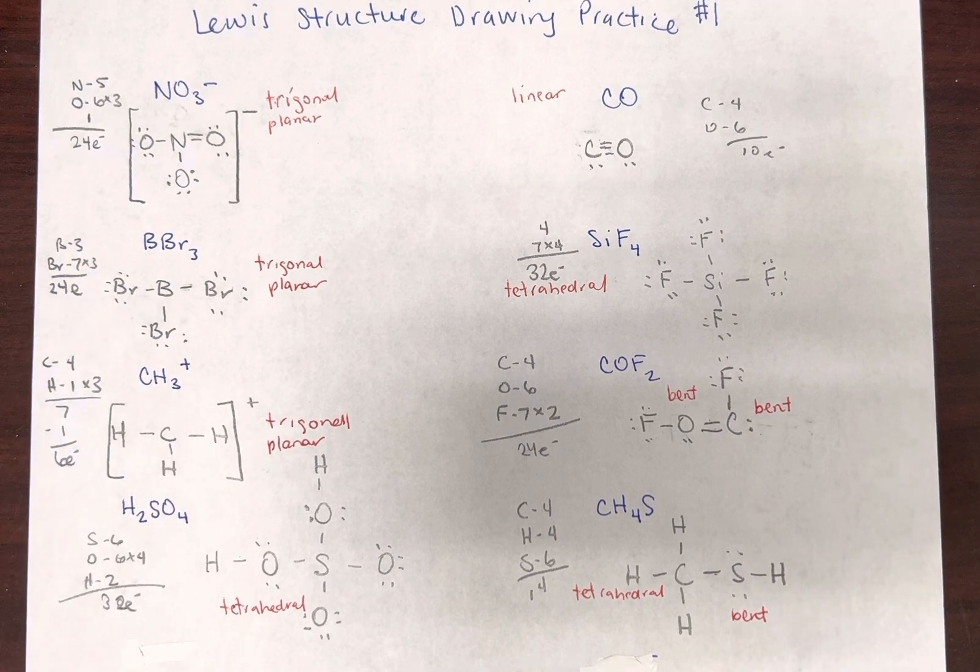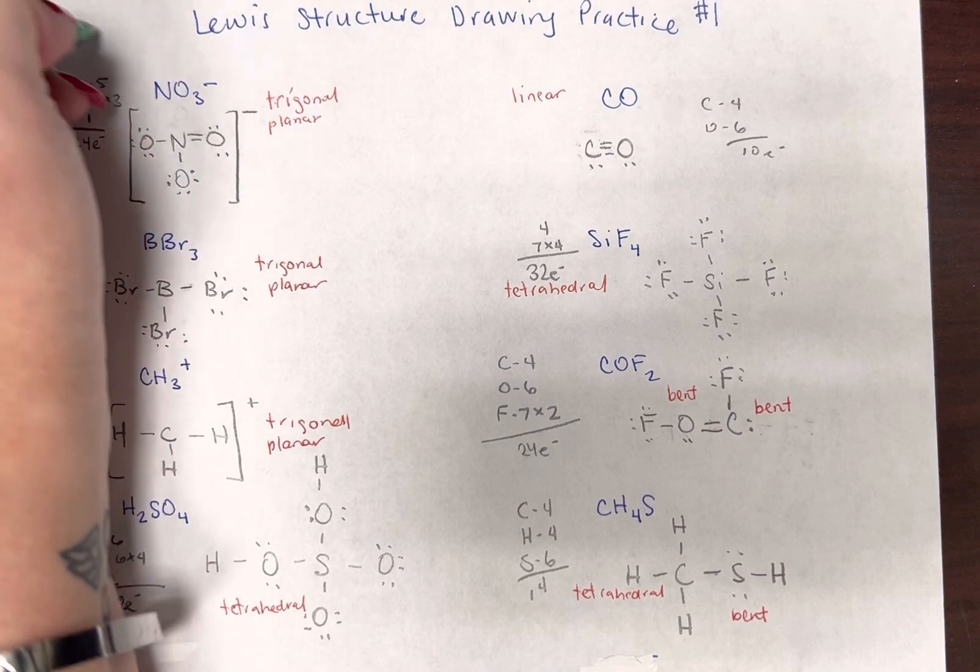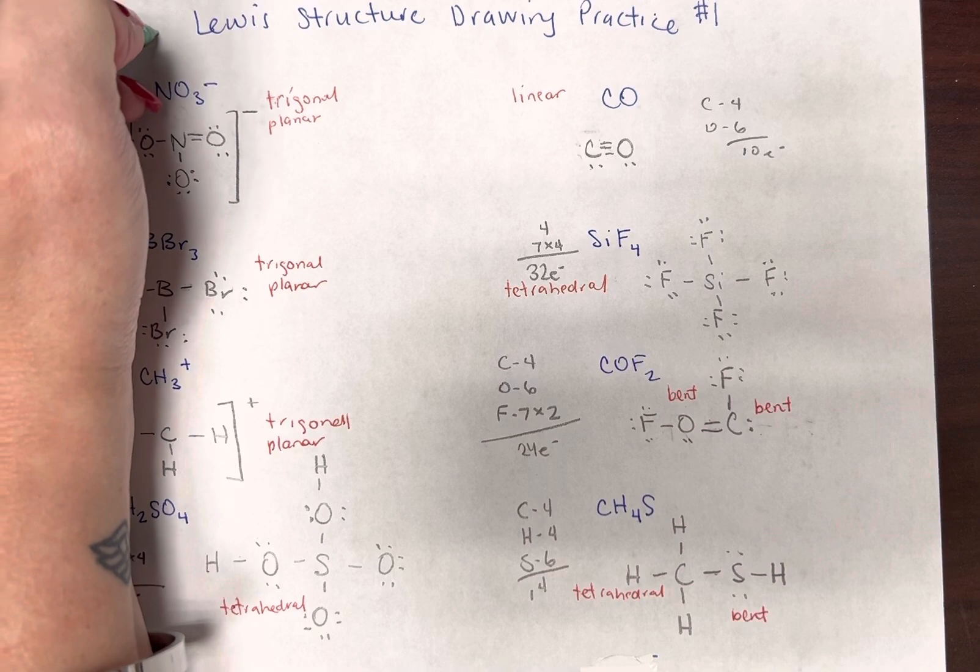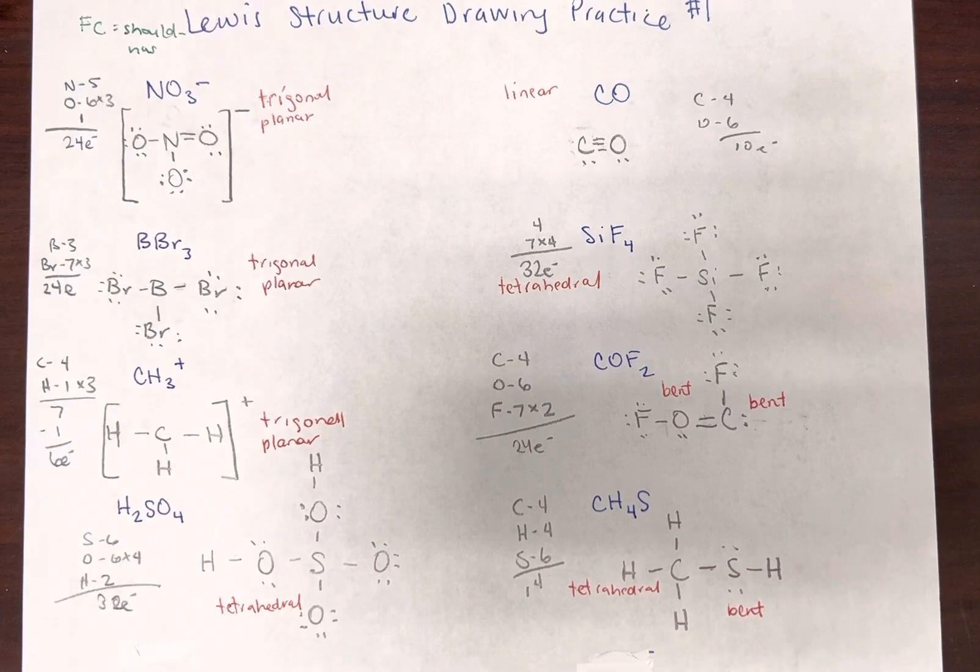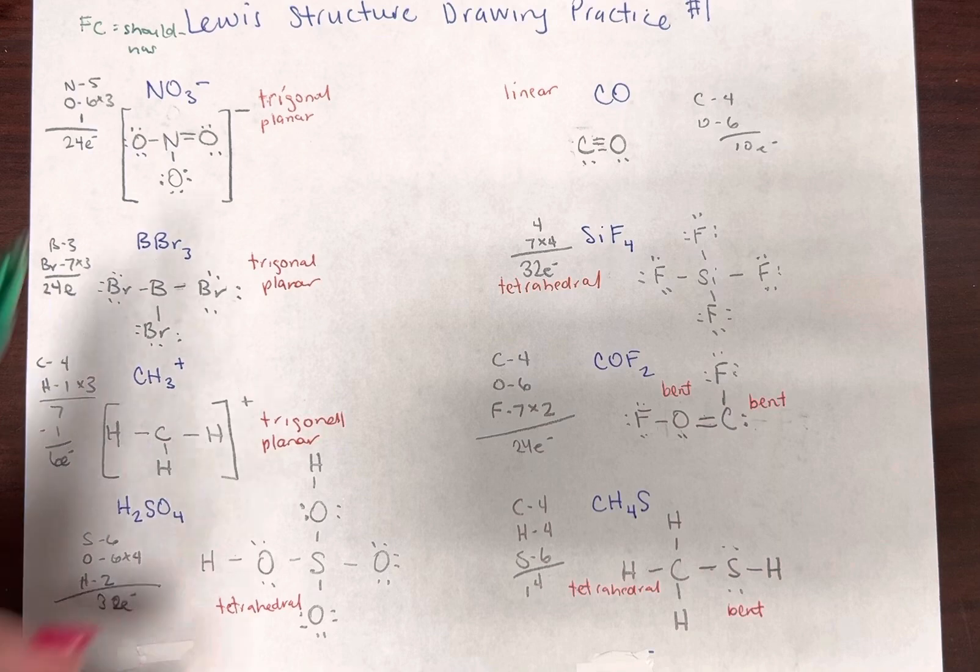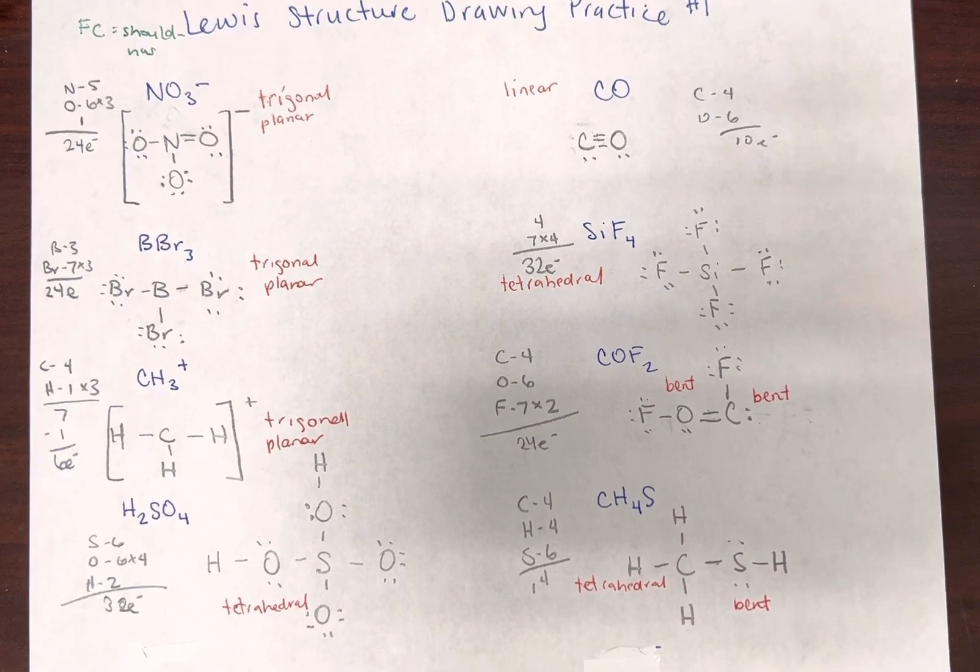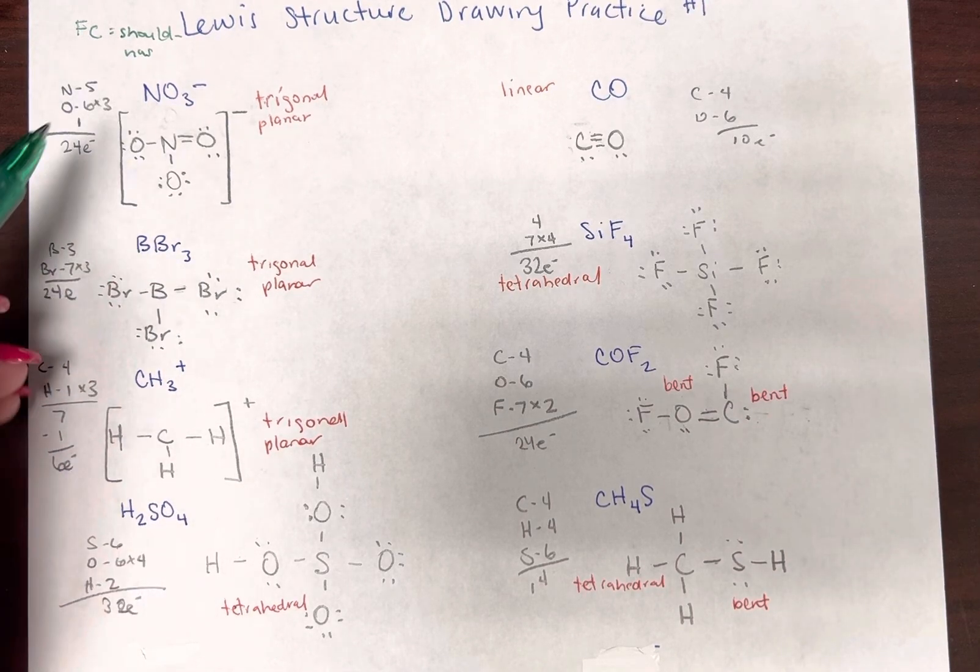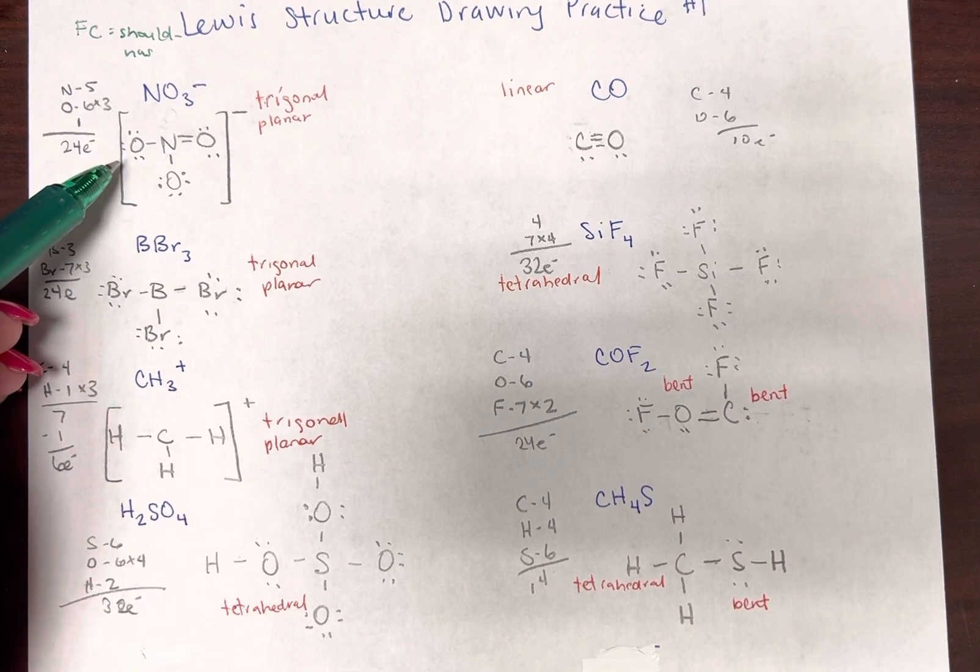So remember, formal charge is should minus has. So we've got to have our valence electrons, and you can see I have mine nicely organized. And then we're going to subtract the number of atoms that it has in the molecule. And every line and every dot counts as one.